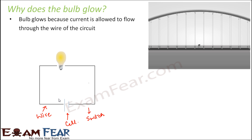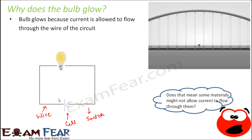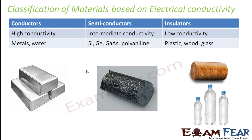In this case, the path is complete but the material of the path doesn't allow the cyclist to move. This means not all materials allow current to flow through them. Some materials allow current to pass through them while others do not. Materials are classified into three categories based on this: conductors, semiconductors, and insulators. Conductors allow current to pass and have very high conductivity — the ability to conduct electricity.